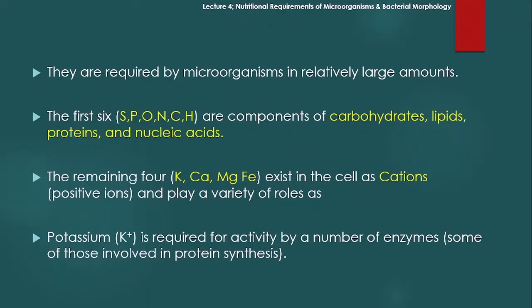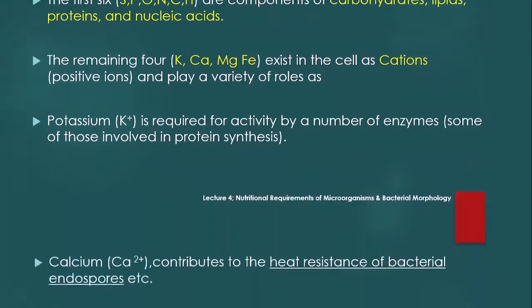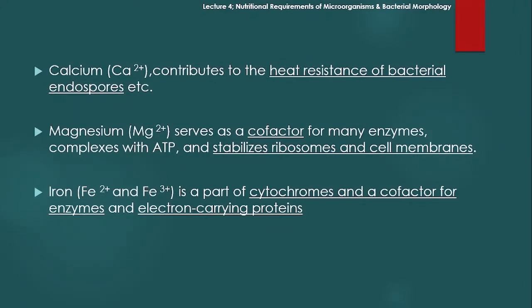For example، potassium is required for activity by a number of enzymes, some of those involved in protein synthesis۔ یعنی potassium ایسا cation ہے جو enzymes کی activity کے لیے چاہیے، especially those enzymes جو protein synthesis میں حصہ لیتے ہیں۔ اسی طرح calcium contributes to the heat resistance of bacterial endospores — bacterial endospores جو heat کو resist کرتے ہیں، اس میں calcium کا role ہے۔